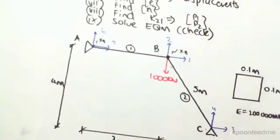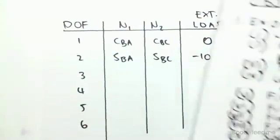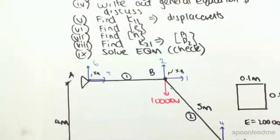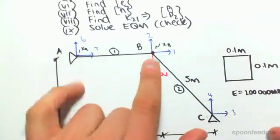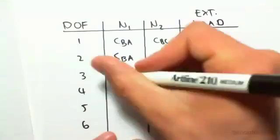Degree of freedom 3, so we're now over here. We want to know the contribution from N1, or the axial load in member 1. Because member 1 doesn't touch degree of freedom 3, its contribution is zero. That's zero.